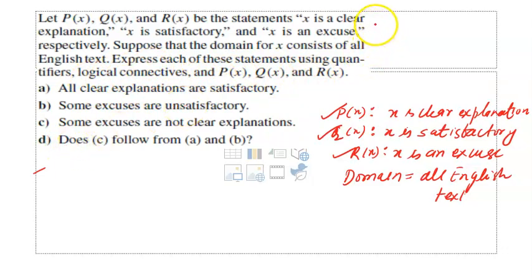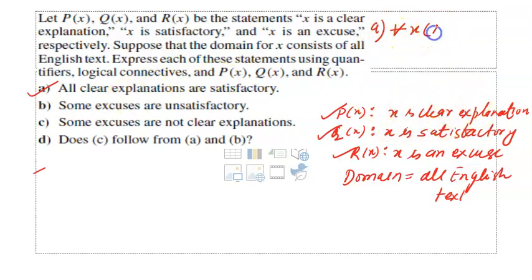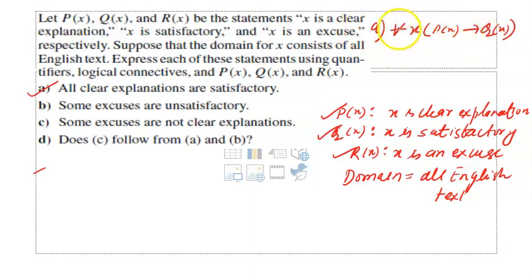Let us write the answers one by one. The first statement is: all clear explanations are satisfactory. I would suggest you pause the video and try writing it yourself to check whether you have understood the concept. All clear explanations are satisfactory — it is obvious we use universal quantification: for all x, P(x) implies Q(x). This means all clear explanations are satisfactory.